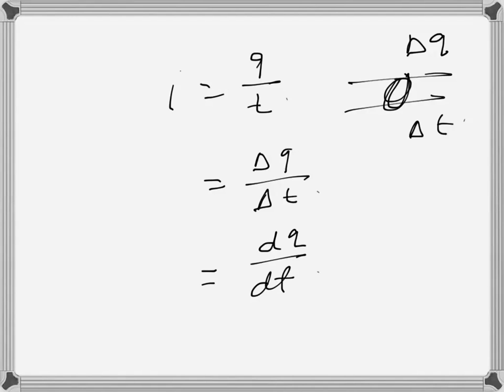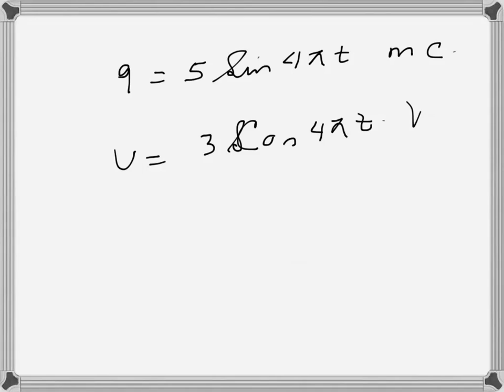So we have a problem here. It says that the charge entering the positive terminal of an element is 5 sin 4πt millicolumb, and the voltage across that terminal from plus to minus is 3 cos 4πt in volts. So the first question is: